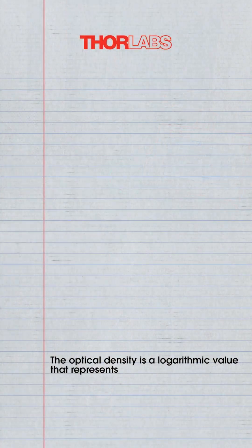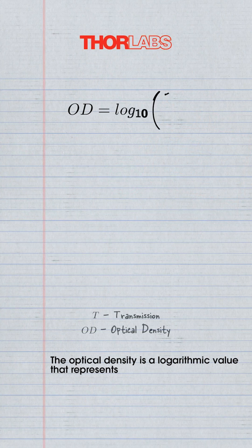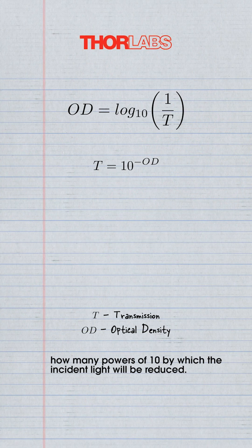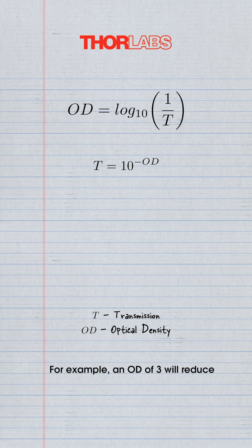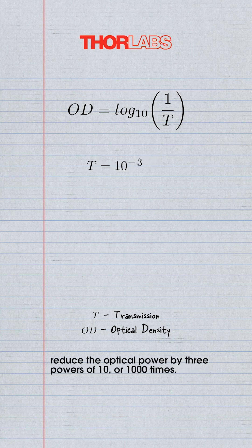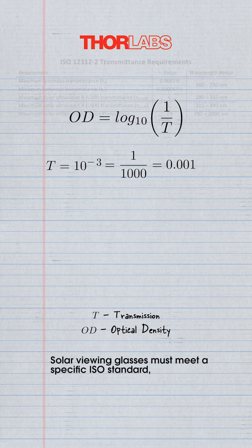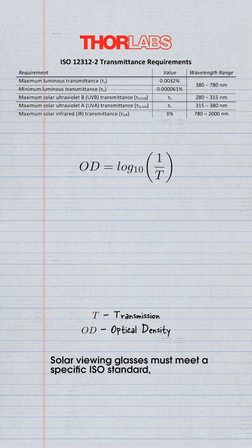The optical density is a logarithmic value that represents how many powers of 10 by which the incident light will be reduced. For example, an OD of 3 will reduce the optical power by 3 powers of 10, or 1,000 times.